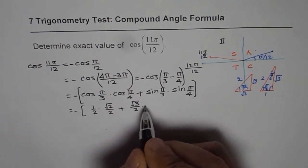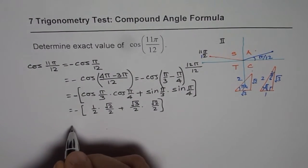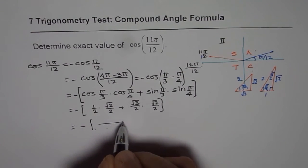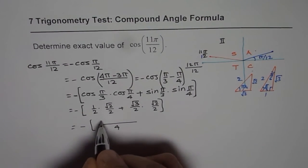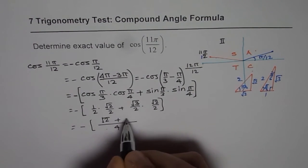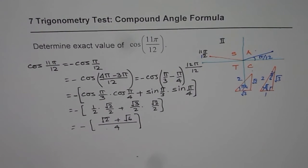Now this could be written as minus. We have common denominator of 4, right? In the numerator we have square root 2 plus 2 times 3 which is square root of 6.